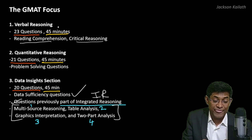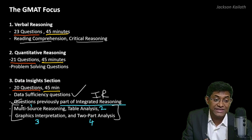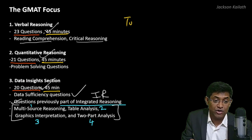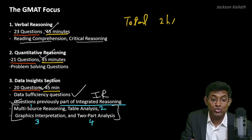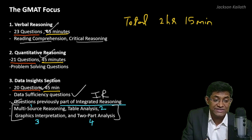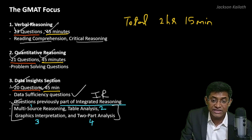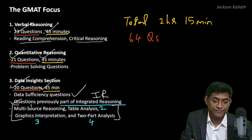The GMAT Focus comprises three sections, and for each section you're given 45 minutes, so the total duration of the test is two hours and 15 minutes. The total number of questions is 23 plus 21 plus 20, which equals 64 questions.